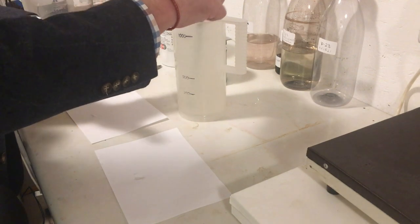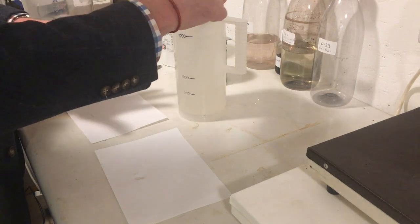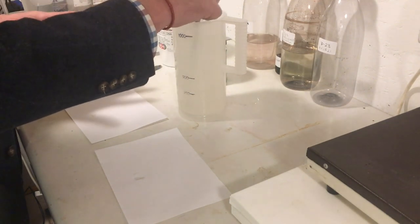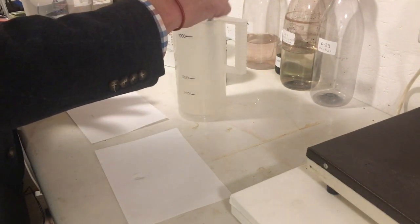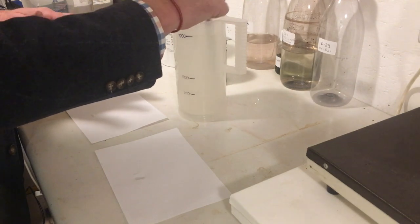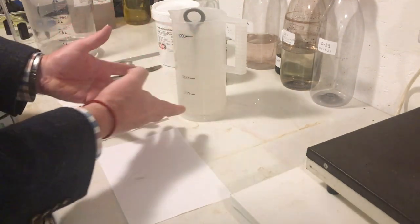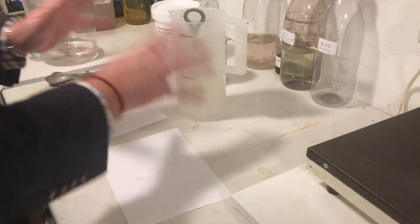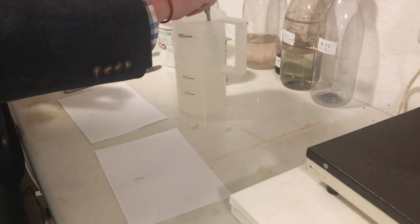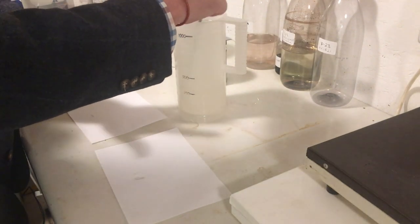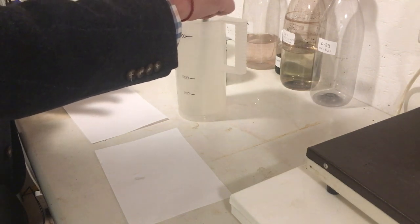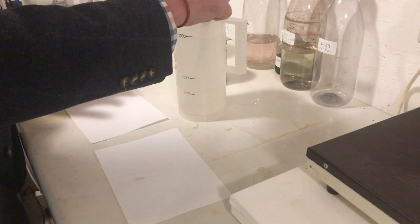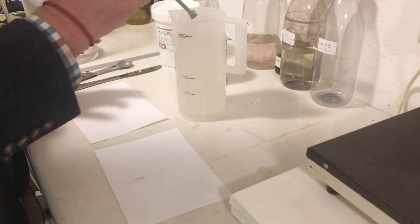Now, another tip about making developers, or other chemistry in the darkroom, it's always best to make it the day before you're going to use it. Because over the next 24 hours, this chemistry is going to permeate throughout the solution. It's going to spread itself out and be completely dispersed. There we are. D23.